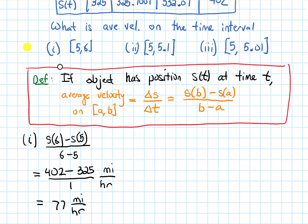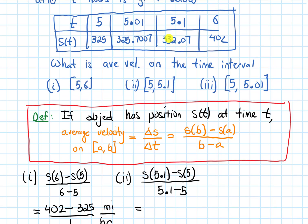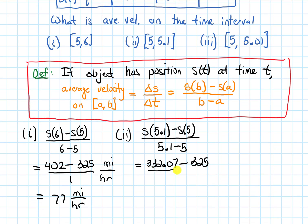All right, let's do it for part two. So now I have a smaller time interval. I need S(5.1) minus S(5), over the change in time, 5.1 minus five. If I plug in these values, S(5.1) is 332.07, S(5) is 325. And the denominator, once I subtract those two numbers, is 0.1. And if I work out what this is, we get 70.7. The units, again, are miles per hour. And that seems reasonable. This miles per hour is a unit of velocity or of speed.